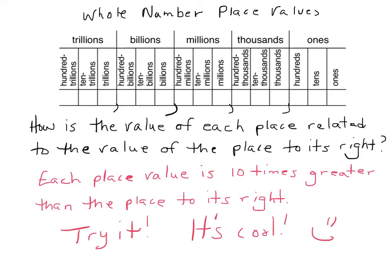Let's go ahead and take a look at this place value chart. We have ones, tens, hundreds, thousands, one-thousands, ten-thousands, hundred-thousands. Notice the same pattern: one-ten-hundred, one-ten-hundred. Millions, one-millions, ten-millions, hundred-millions, billions, etc. It's always going to follow this pattern.